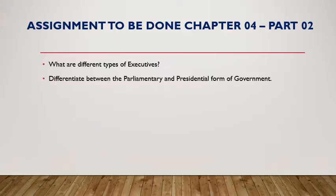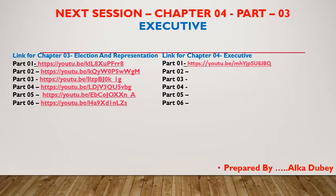The assignment for Chapter 4 Part 2 consists of: Number 1 — what are the different types of executive? Write about the three types of executive and the features of each. Number 2 — differentiate between the parliamentary and presidential form of government, writing the differences in their features. In the next session, Chapter 4 Part 3, we will be doing the parliamentary executive in India.